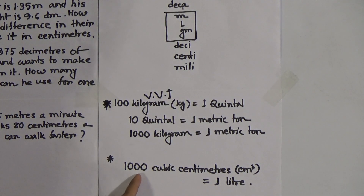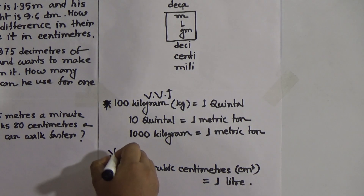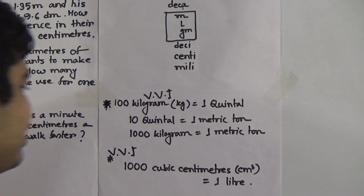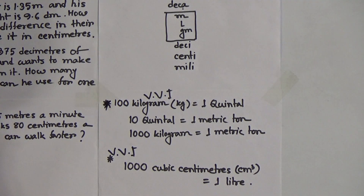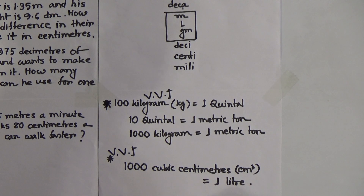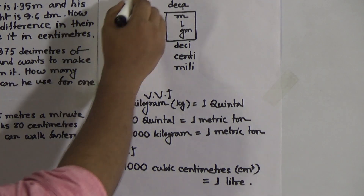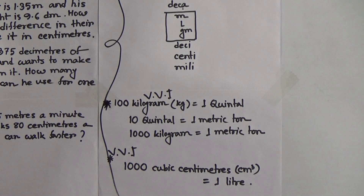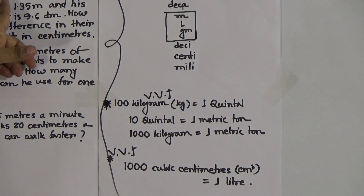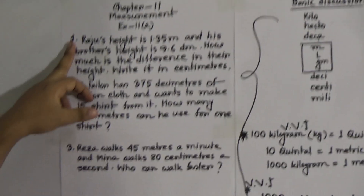Another very important fact for your annual term exam: 1000 cubic centimeters equal to 1 liter. Remember, 1000 cubic centimeters equal to 1 liter. This is the basic of this chapter. Now we shall solve three problems from Exercise 11A.